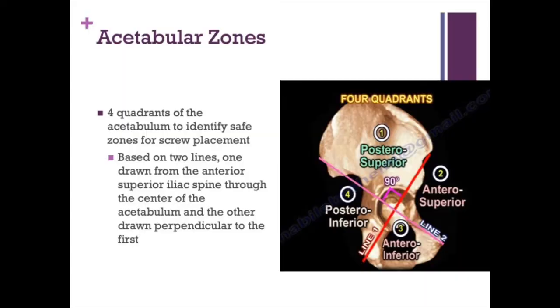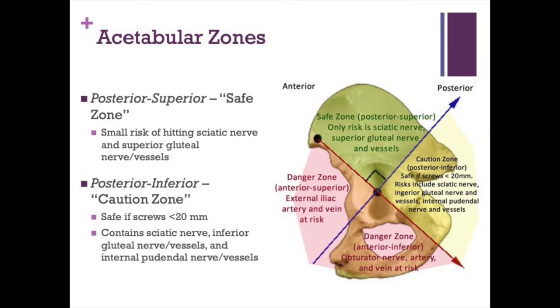Next we'll talk about the acetabular zones — essentially a four-quadrant makeup of the acetabulum that helps determine screw placement during cup fixation in total hip arthroplasty. It's based on two lines: one drawn from the anterior superior iliac spine through the center of the acetabulum, and the other drawn perpendicular to that line, also through the center. This establishes four zones: posterosuperior, anterosuperior, posteroinferior, and anteroinferior. The posterosuperior zone is the safe zone, with small risk of hitting the sciatic nerve only as you go more posterior and inferior.